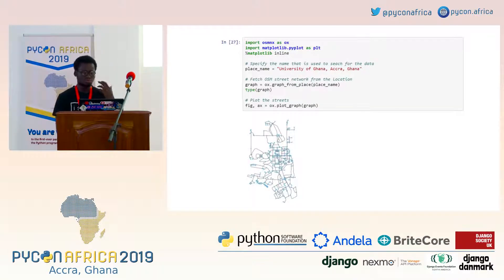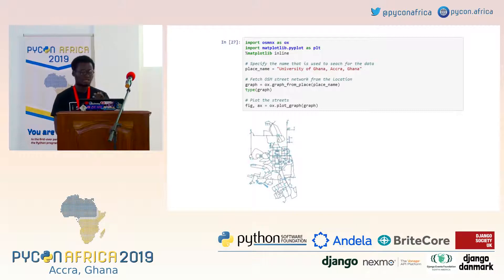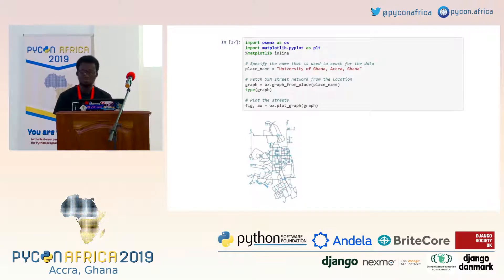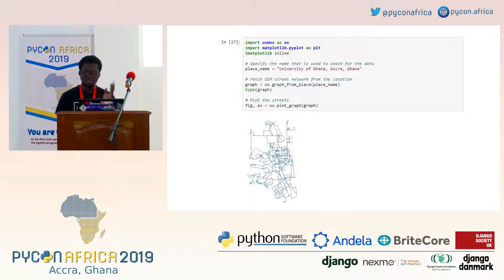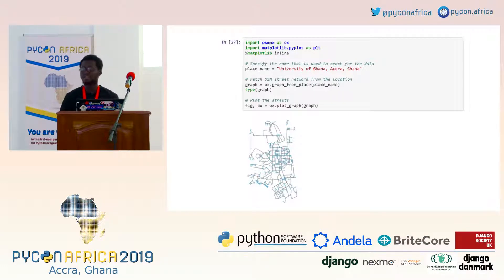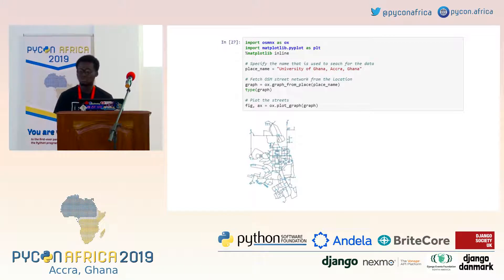There are libraries to do connectivity and see a graph network. This is a quick graph network of routes around the University of Ghana — just some train lines — and with the OSMnx library, I could just do this quickly.